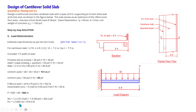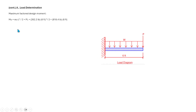Now we calculate the factored design moment. The moment at the support for this cantilever is: Mu = wL²/2 + PL = 262.2 × 6² / 2 + 818.4 × 6 = 9,630 pound-feet. This is the maximum factored design moment at the support.